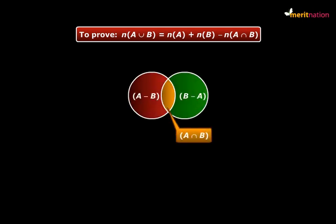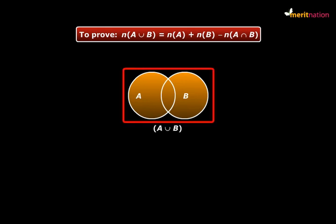Now you can see from the Venn diagram that they are disjoint sets. That is, they do not have any element in common. And when we combine these three sets, they represent A union B. This region is A union B, right?